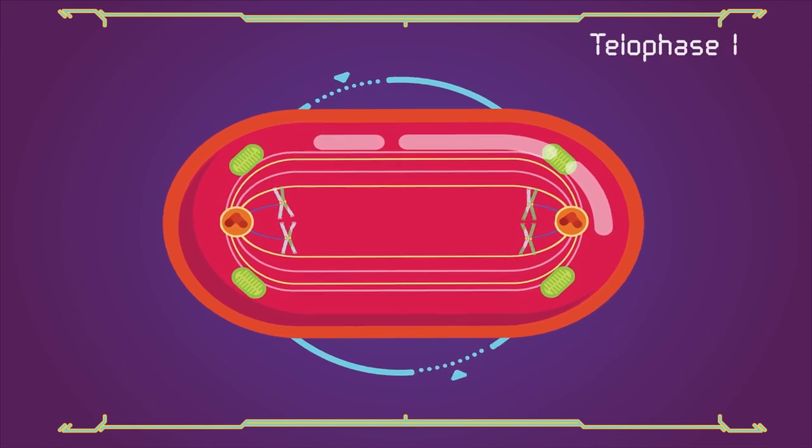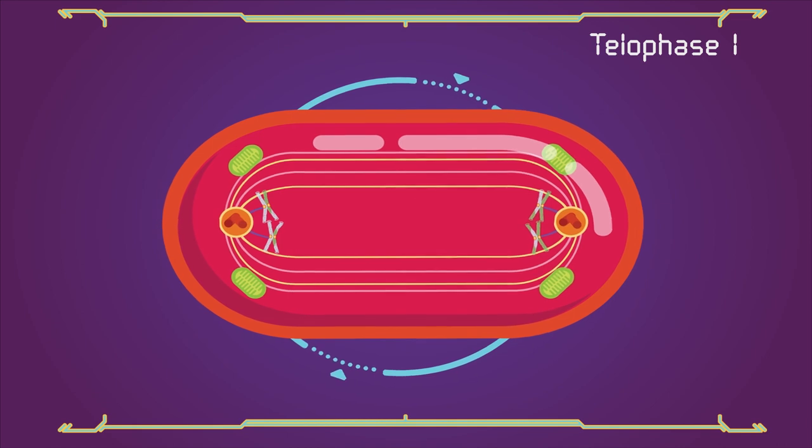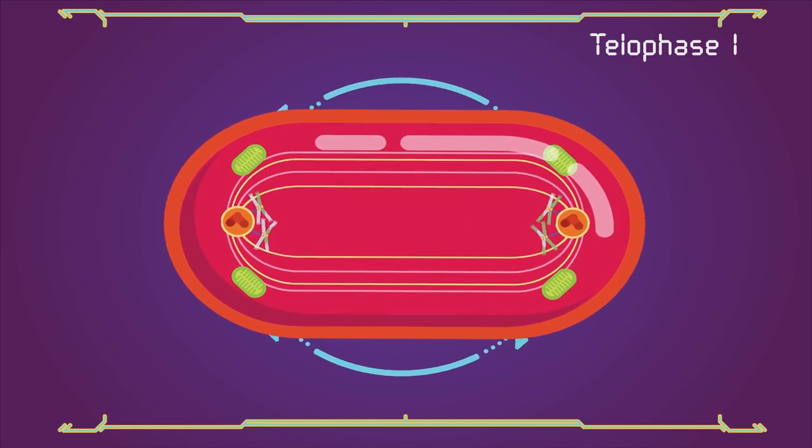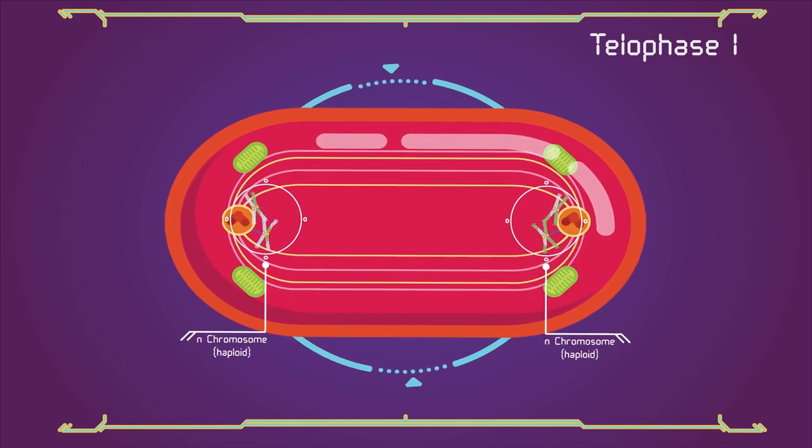Telophase 1: The first meiotic division effectively ends when the chromosomes arrive at the poles. Each daughter cell now has half the number of chromosomes.